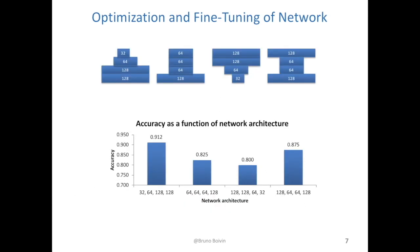Speaking of the network architecture, different architectures have previously been used for different tasks. For example, people have used hourglass-shaped networks to estimate human pose. Here I compared four different architectures. The numbers shown in the diagrams are the number of filters in each layer, and the idea was to vary the number of filters in the different layers to optimize the accuracy of the network.